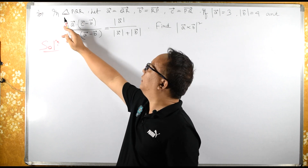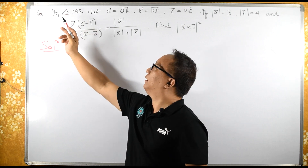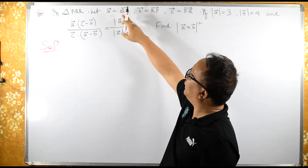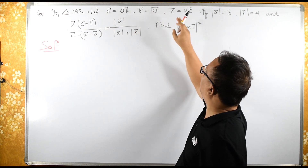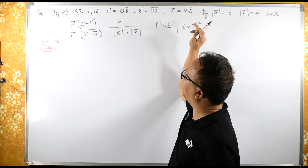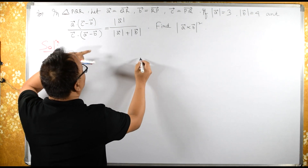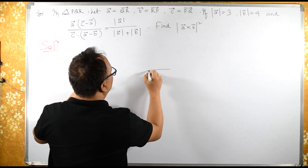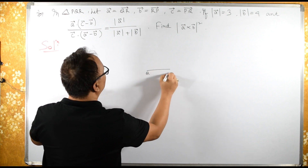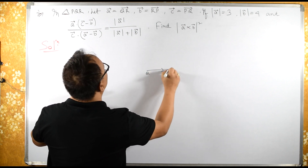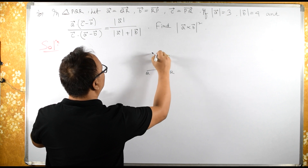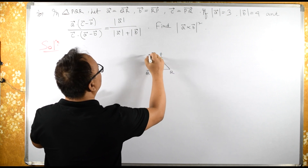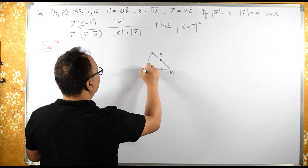In this triangle P, Q, R we have vectors A, B, C. It is cyclic — it goes from Q to R, then R to P, and then P to Q.